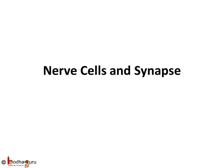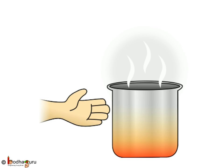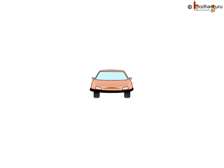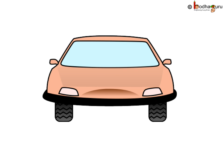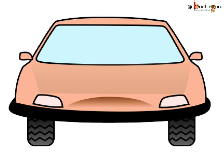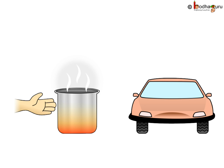Hello everyone. Imagine you accidentally touched something very hot, or you are in the way of a car. In such situations, you have very little time to avoid serious damage or an accident. Yet, most people would respond fast enough. So, how can our nervous system act so fast? Let us understand.